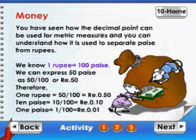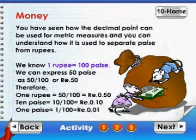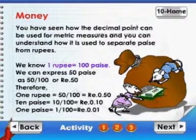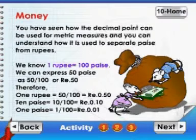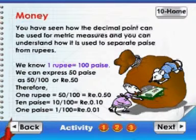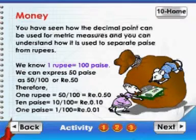Money. You have seen how the decimal point can be used for metric measures, and you can understand how it is used to separate paisae from rupees. We know one rupee is equal to hundred paisae.